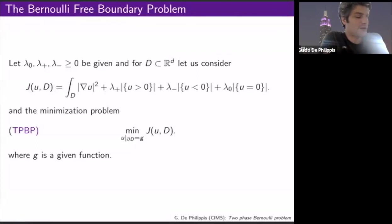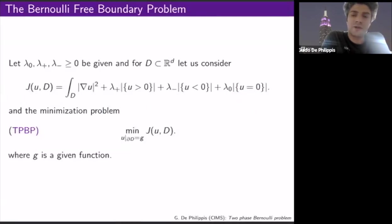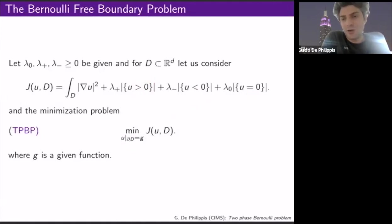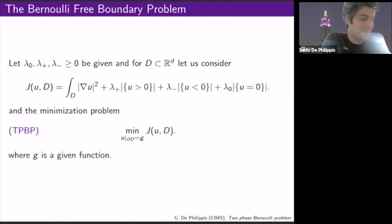Let me start with a remark which is important and causes some confusion in the literature: in a sense, this is like a three-phase problem, because you see all three phases of the function — positive, negative, and zero. On the other hand, if D has finite measure, the sum of the measures where U is positive, negative, and zero equals the measure of D, so you can always absorb one into the other two. I like this formulation because there is much more symmetry in the three phases, and I would argue later that this is really a three-phase problem.